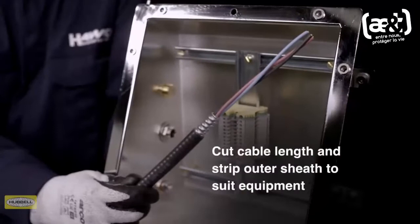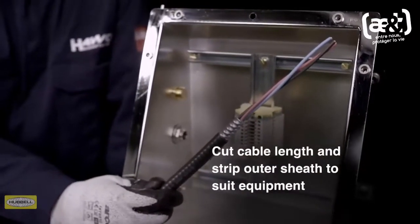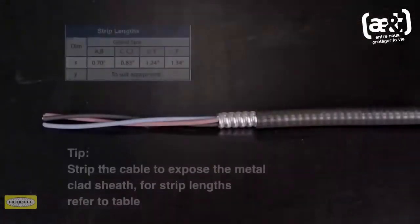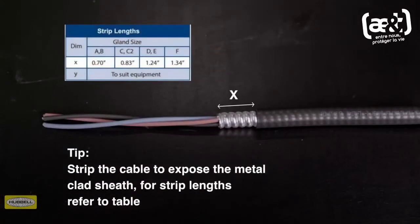Allow sufficient length of cable to suit the equipment the cable is being terminated into. Strip the cable to expose the metal clad sheath to enable the connection of the conductors to the terminal.